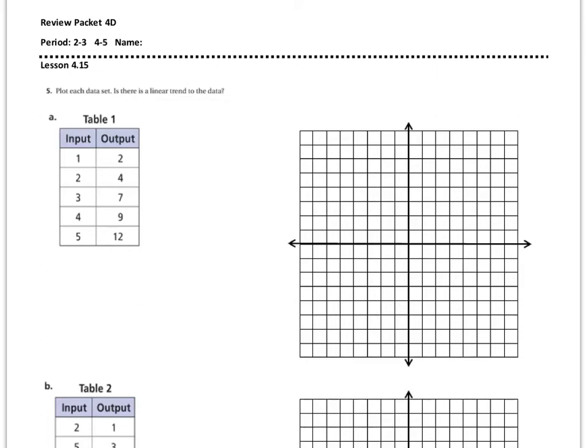This video is to go over lesson 4.15 on Review Packet 4D. Number 5: Plot each data set. Is there a linear trend to the data?